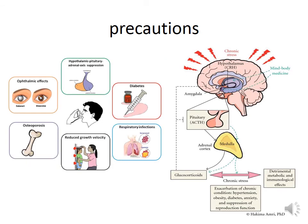Cortisol secretion is tightly regulated by the hypothalamic-pituitary-adrenal axis through a feedback mechanism where glucocorticoids suppress the secretion of CRH and ACTH, maintaining a constant level. When we administer corticosteroids from outside for a long period, there is inevitable suppression of this axis. Because this exogenous administration is not physiological, there will be side effects that we need to monitor to prevent major problems.